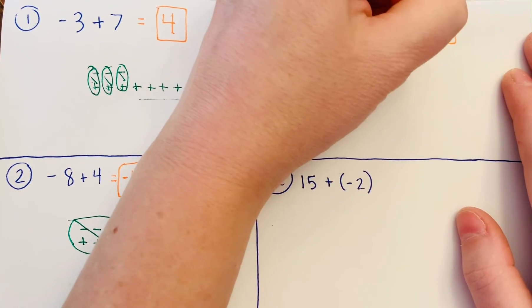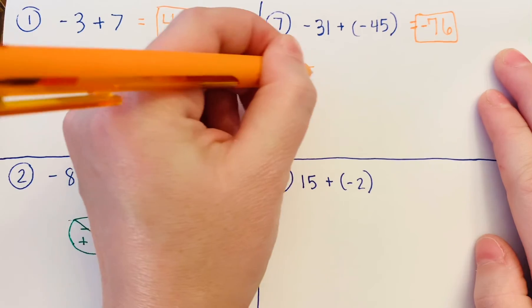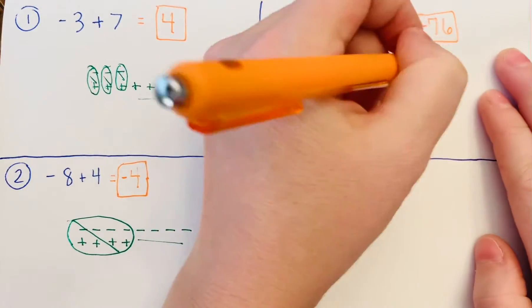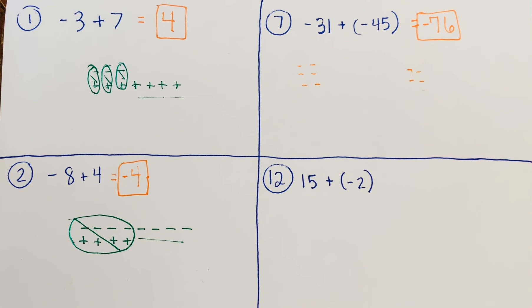You could draw out your negatives—31 negatives and 45 negatives. I'm not going to draw all of those, but the point is they're all negative so there wouldn't be any zero pairs. You'd just end up with a bunch of negatives, in this case 76 of them.